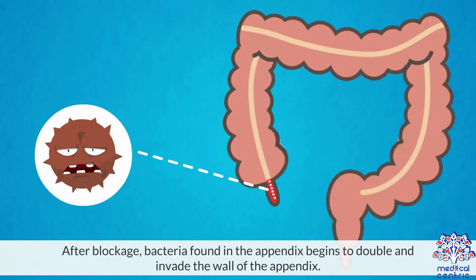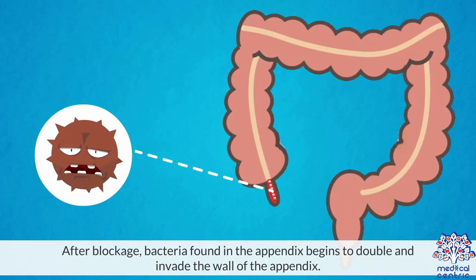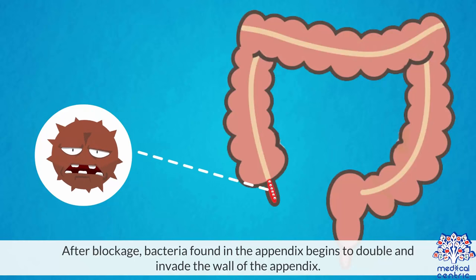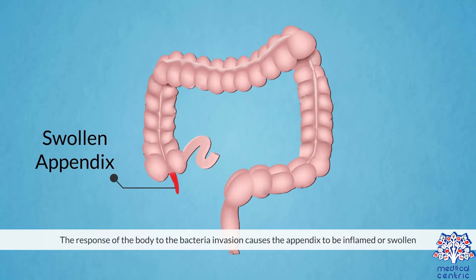After blockage, bacteria found in the appendix begins to multiply and invade the wall of the appendix. The response of the body to the bacterial invasion causes the appendix to become inflamed or swollen.